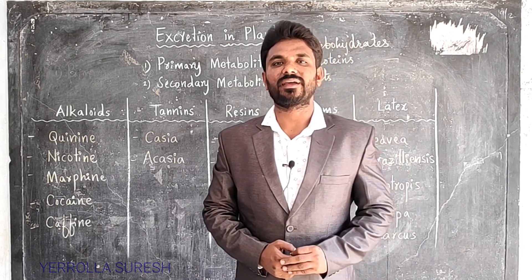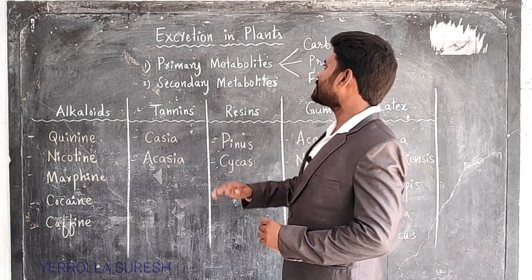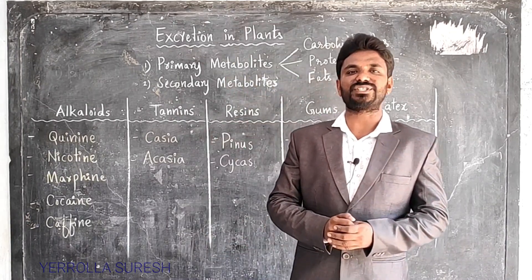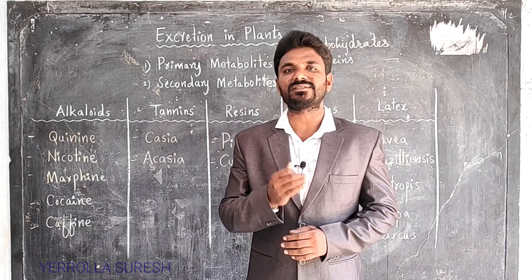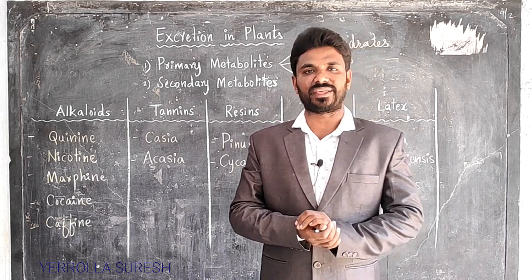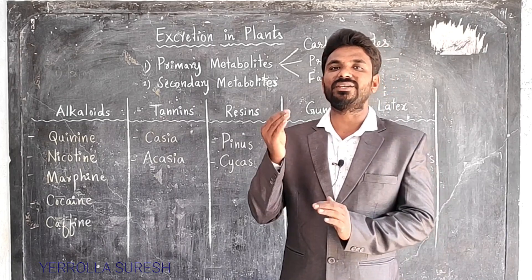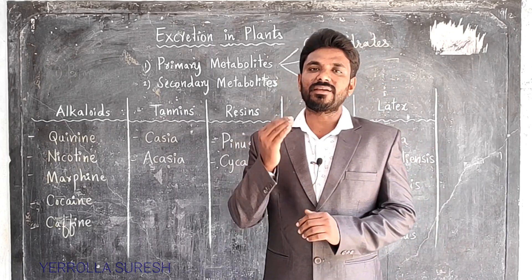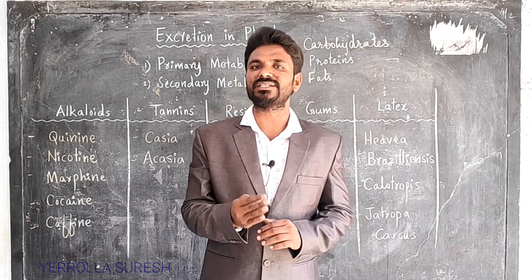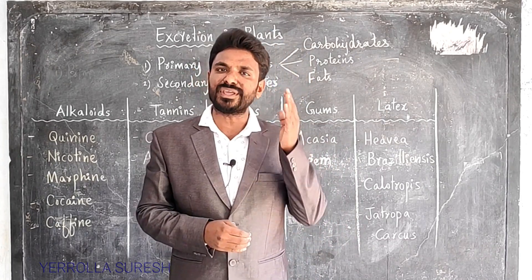Good morning everybody. In this session I'm going to explain excretion in plants. First of all, let's understand the meaning of the word excretion. Excretion means elimination or removal of waste materials out of our body. Excretion of waste material is an essential task of an organism. If waste materials are not excreted, they become poisonous and disturb all metabolic activities, leading to the death of an organism.